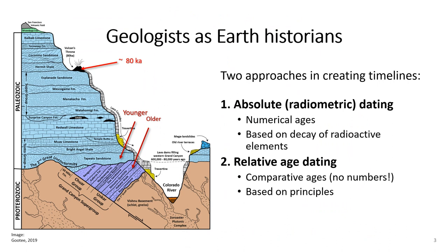There are two different approaches you can use when creating timelines in Earth Science. The first is absolute or radiometric dating, which involves putting a numerical age on something. This approach is based on the decay of radioactive elements, which has only been an available technology for a few decades. The second approach is relative age dating, which doesn't involve actual ages, but rather comparative ages where we can say something is older or younger than something else. Relative age dating has been used for centuries because it is based on principles instead of technology.